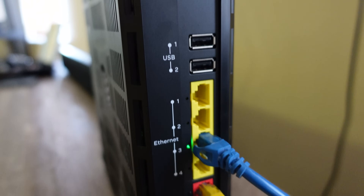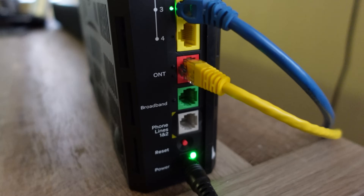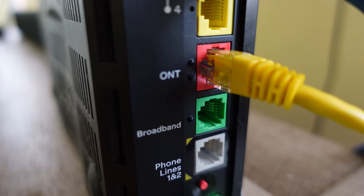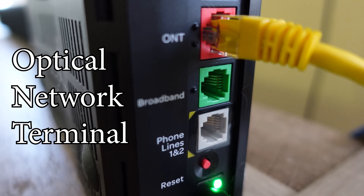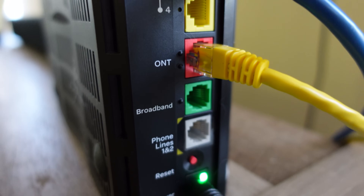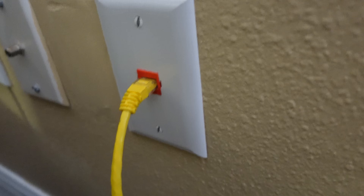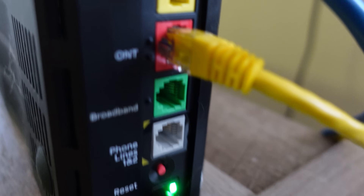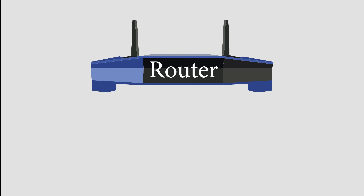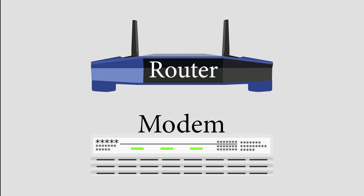Depending on your router, you might also see a broadband port or another port usually in red called ONT. All of these do the same thing as the coaxial cable — they take the Internet from your service provider and feed it into your modem. In most cases these days, you'll have a router-modem combo, so you'll only have one device with all of this built in, which is much simpler than having two separate boxes.